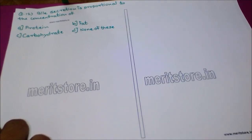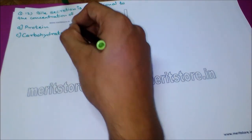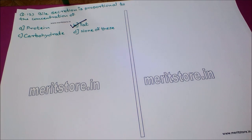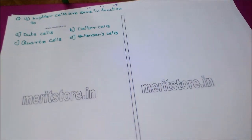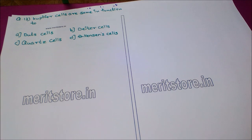The next question: bile secretion is proportional to the concentration of — option A: protein, option B: fat, option C: carbohydrate, option D: none of these. The answer to this question is fat — bile secretion is proportional to the concentration of fat.